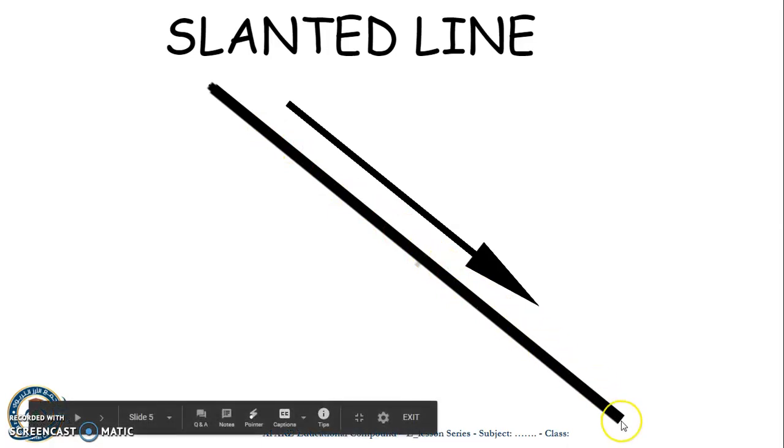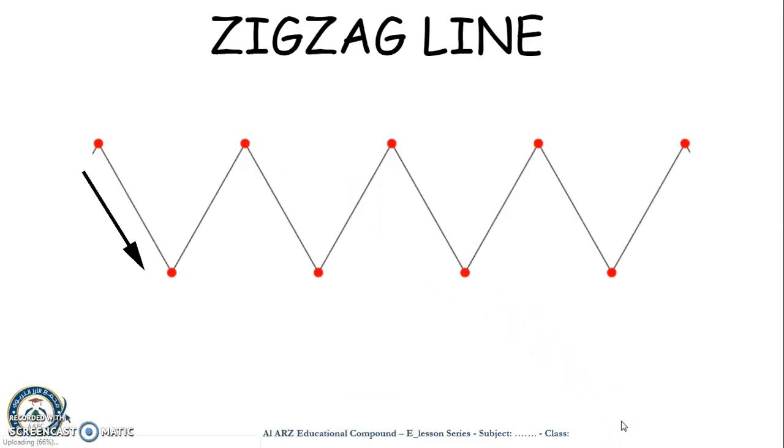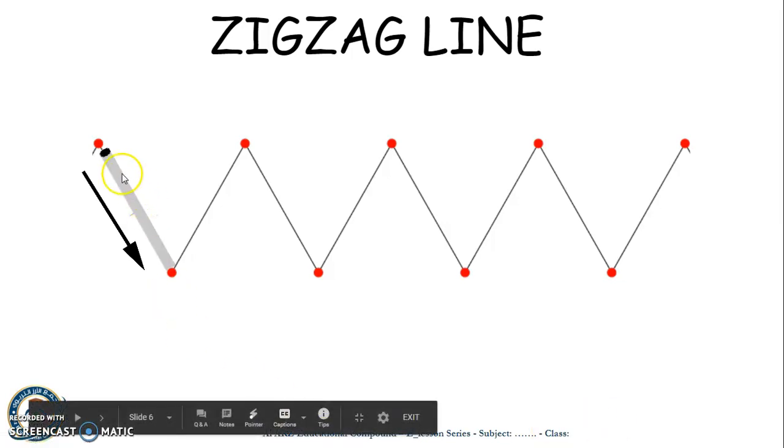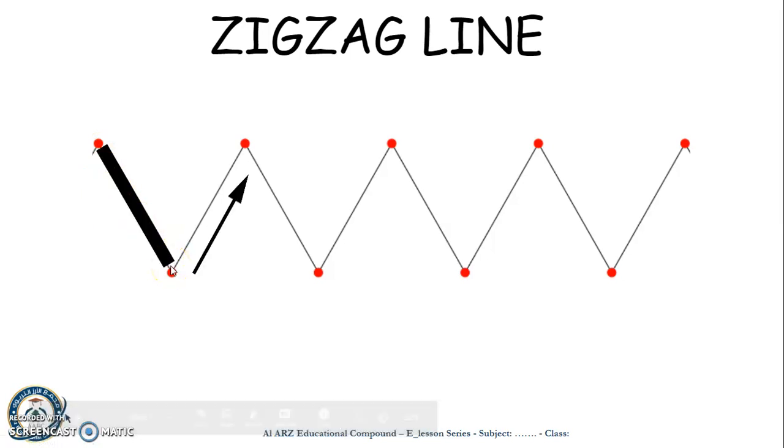Zigzag line, zigzag line. This is how to draw a zigzag line. They are little slanted lines on different positions. You go up.